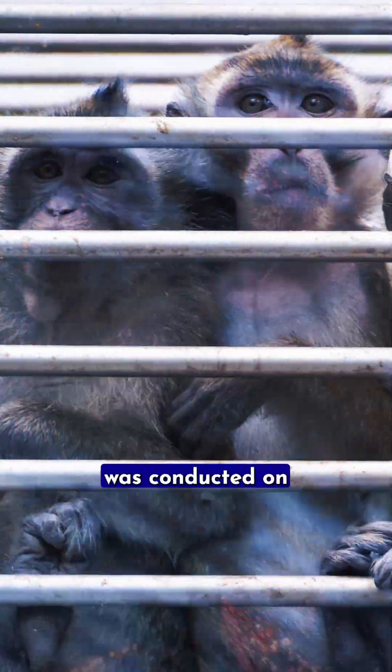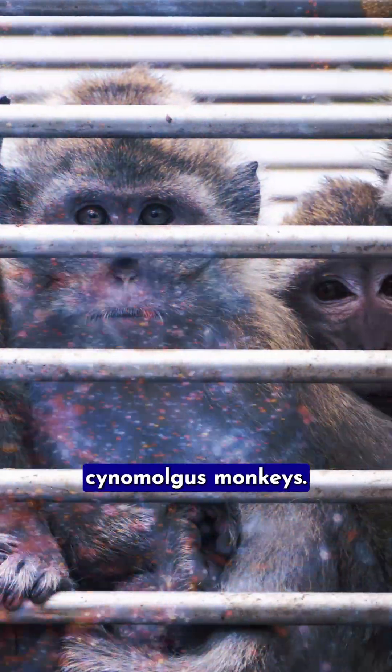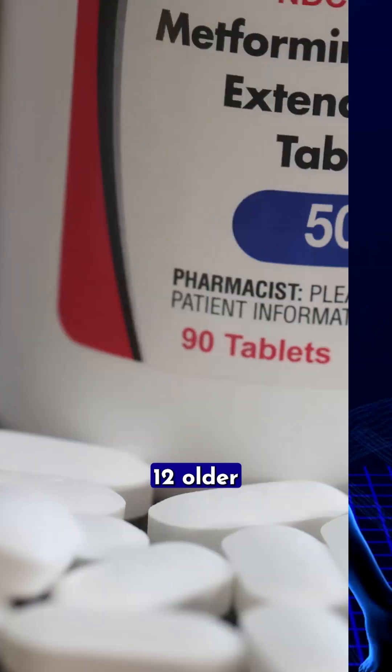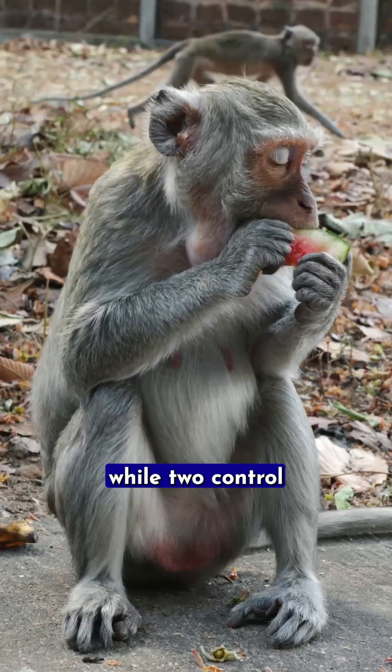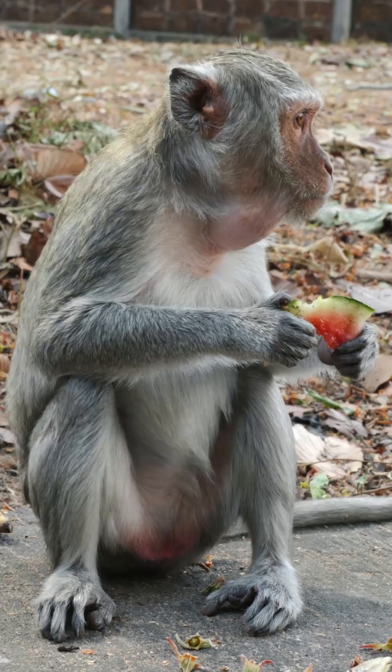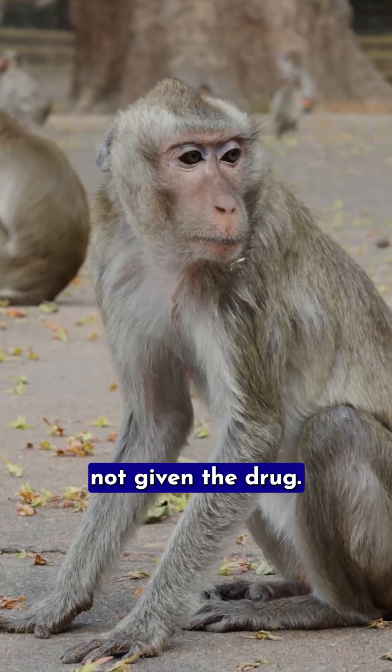The 40-month-long research was conducted on adult male xenomogous monkeys. 40 months is roughly equal to 13 years of human life. 12 older monkeys were given metformin, while two control groups, one of 16 older monkeys and 18 young to middle-aged monkeys, were not given the drug.